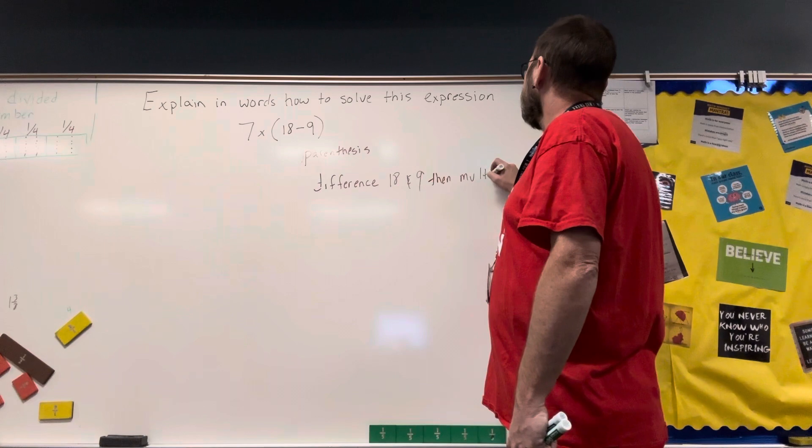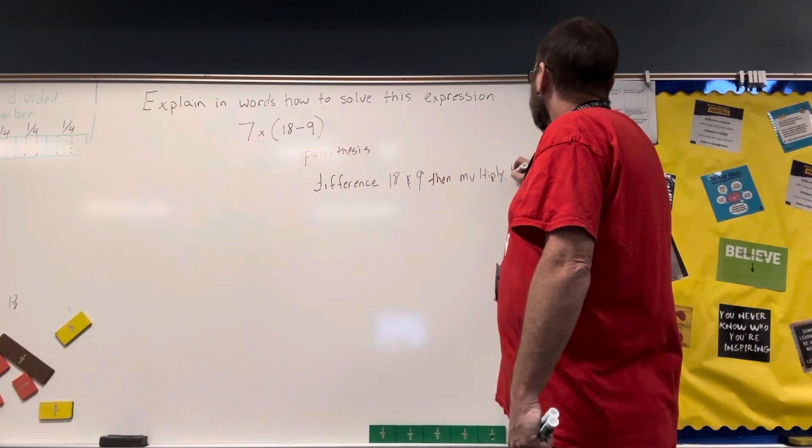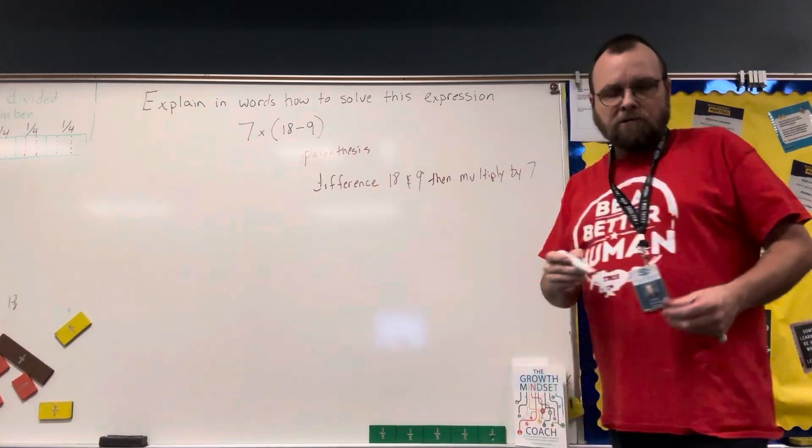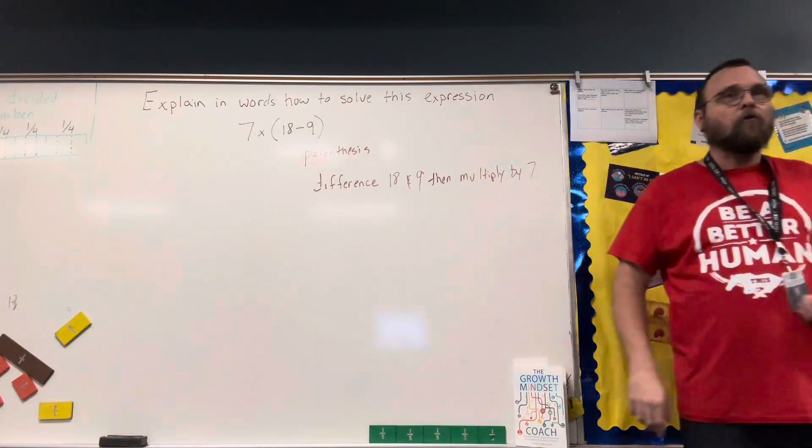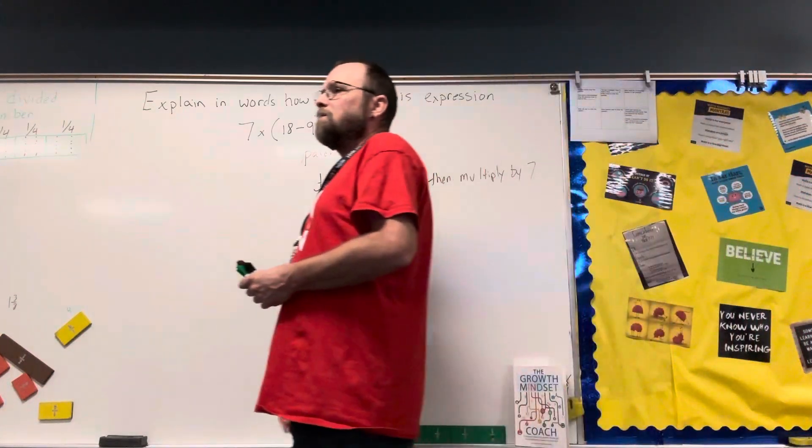Multiply this. Multiply the difference by 7. So you find the difference of 18 and 9, multiply that difference by 7.